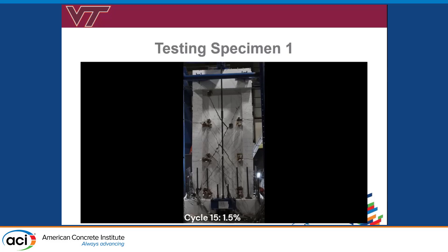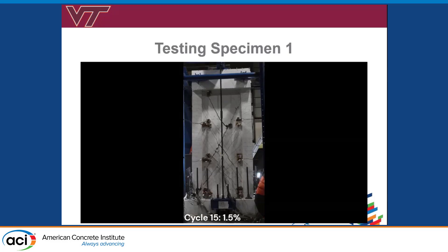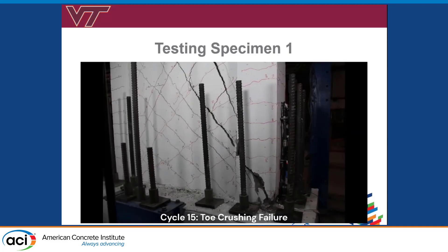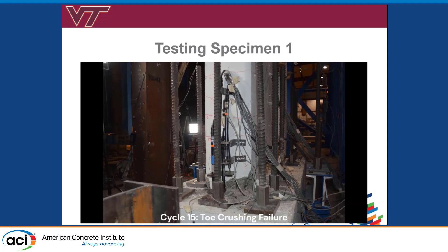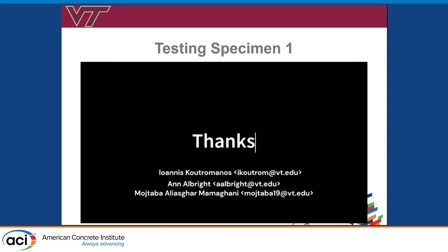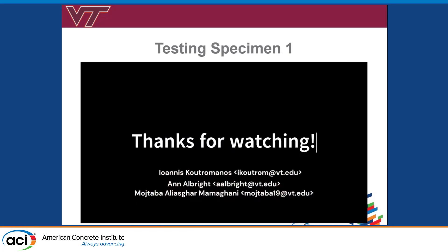What happens is a large triangular portion of the wall ends up shearing into the toe, resulting in a toe failure. This is a very dramatic, non-ductile toe crushing failure — not a safe way for a structure to fail. Typically in structures we want a much more ductile, slow response so that people have time to evacuate the building.